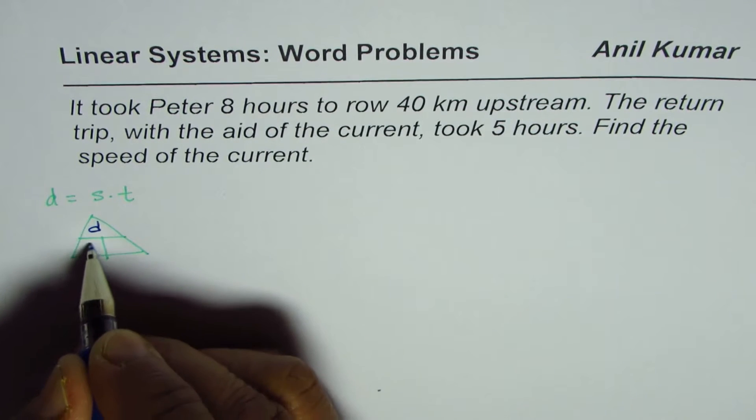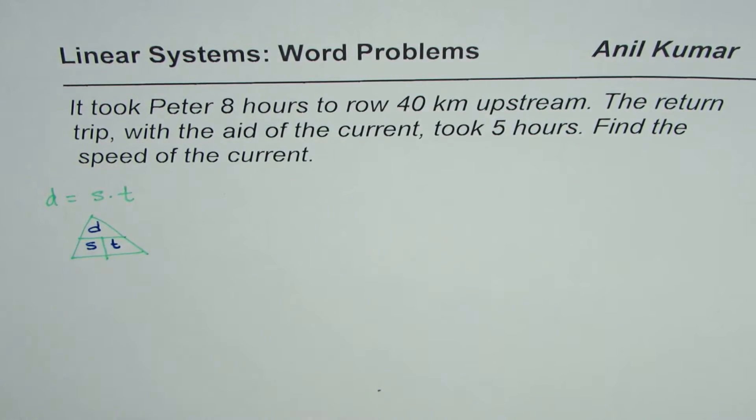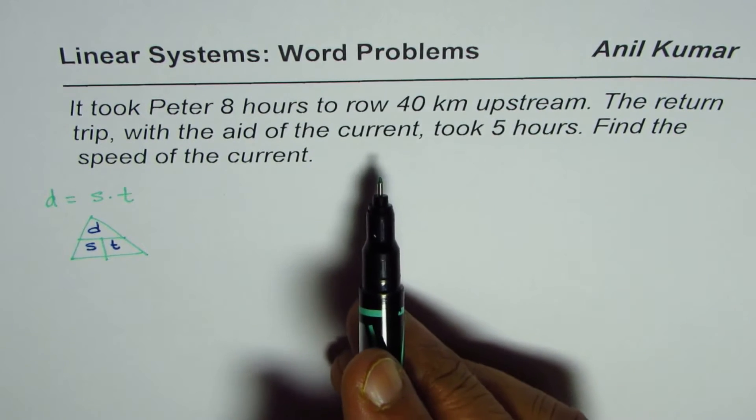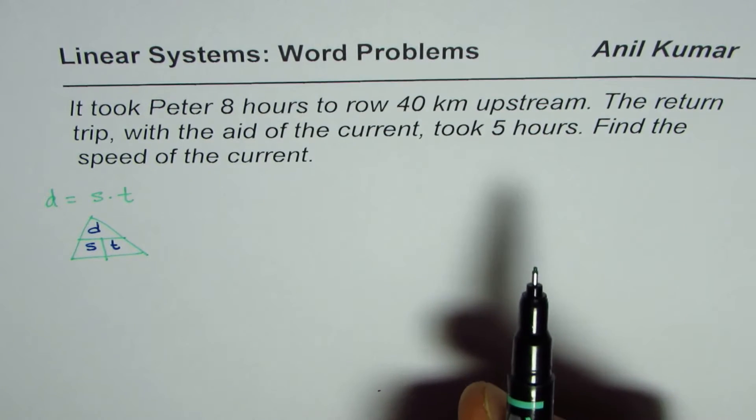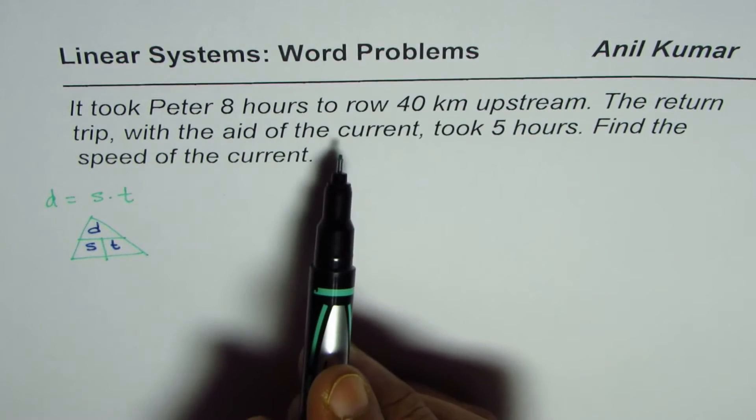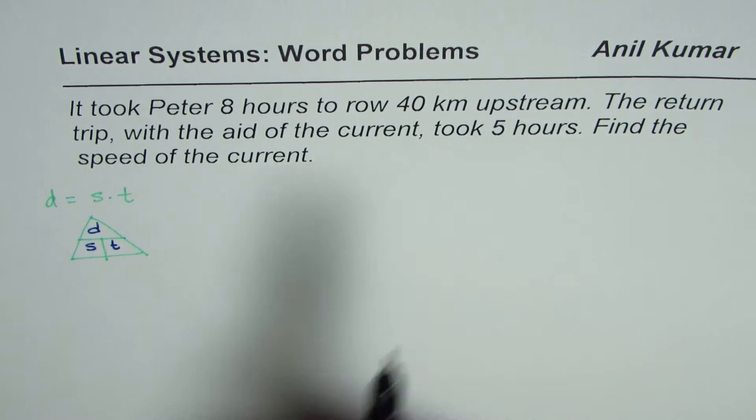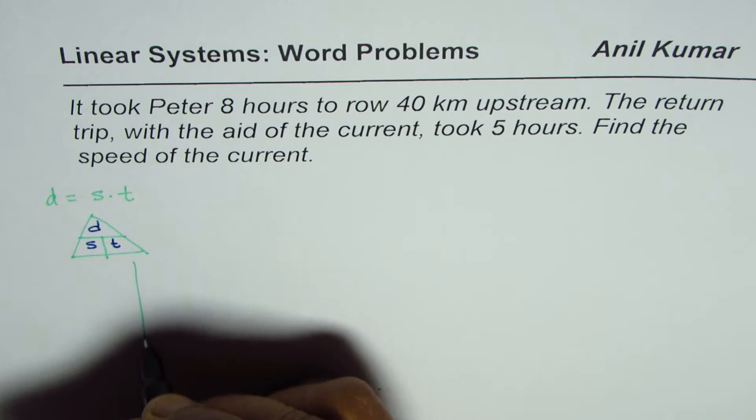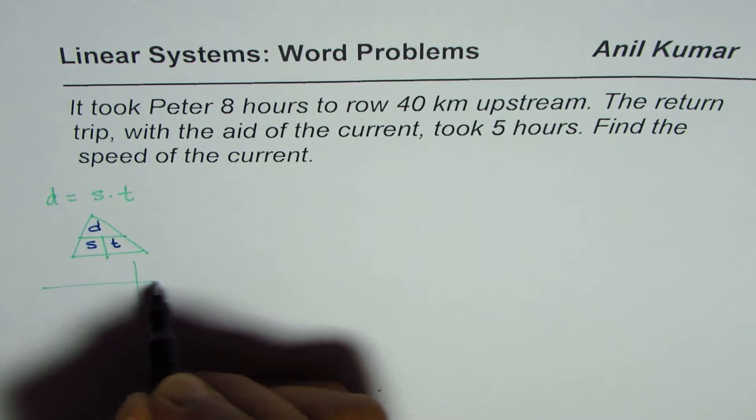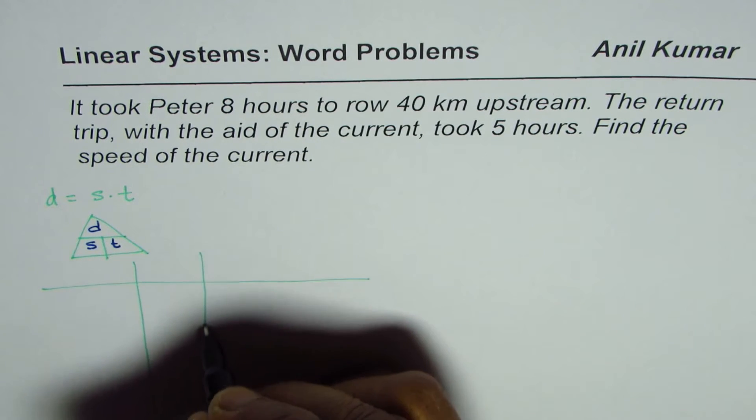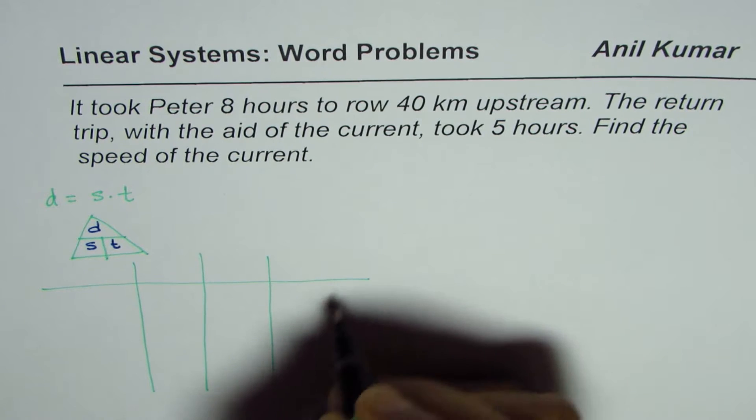In distance, speed, time, I prefer to solve by making a sketch or by making a table. In this case, there are two cases - one Peter is going upstream or downstream, so let me make a table showing these two situations. We have three columns for distance, speed, and time.